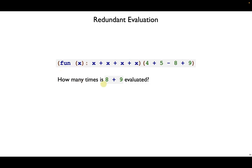So if we were to run this code, how many times is eight plus nine evaluated? Well, the answer is four times. And that's a lot of duplicate work that we didn't need to do because the result of the arithmetic expression is always the same thing. This can cause real problems.